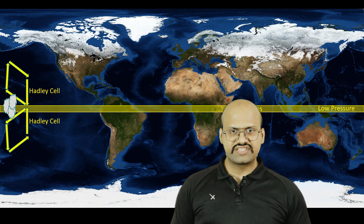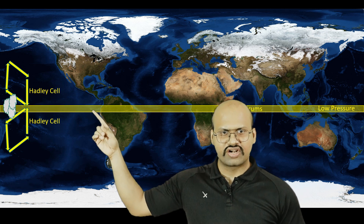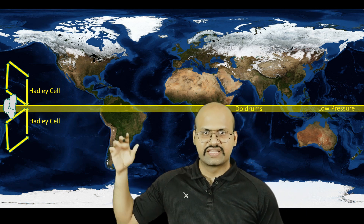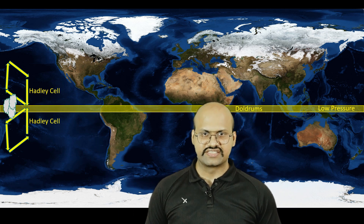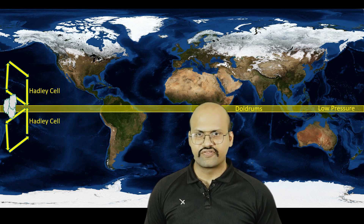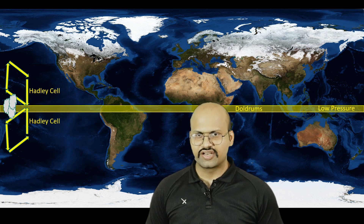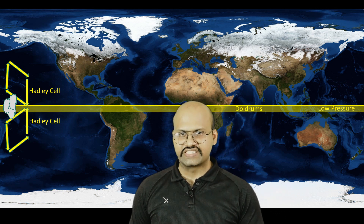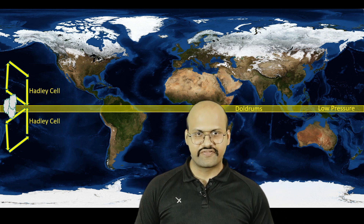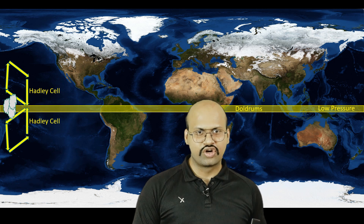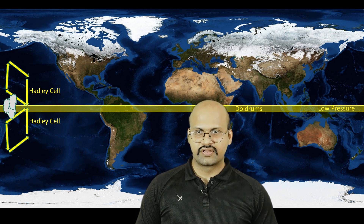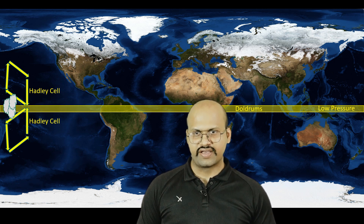This region is also called the doldrums because there is no surface current in these regions. Without winds it is difficult to maneuver ships, and therefore this region is called the doldrums.